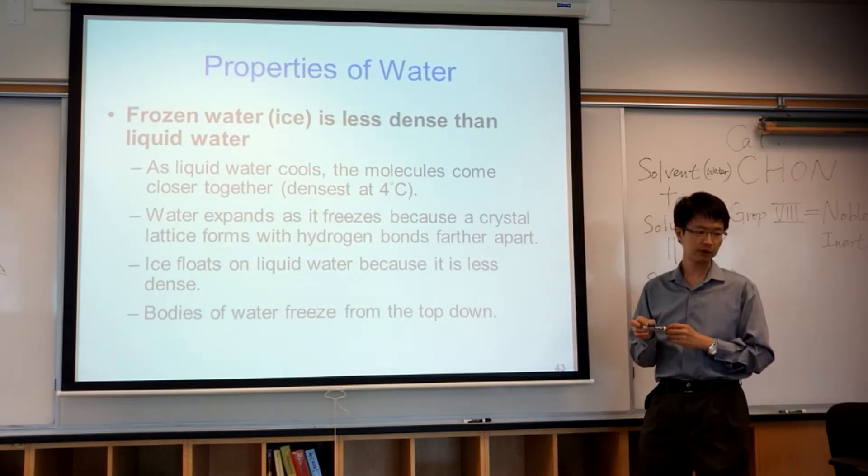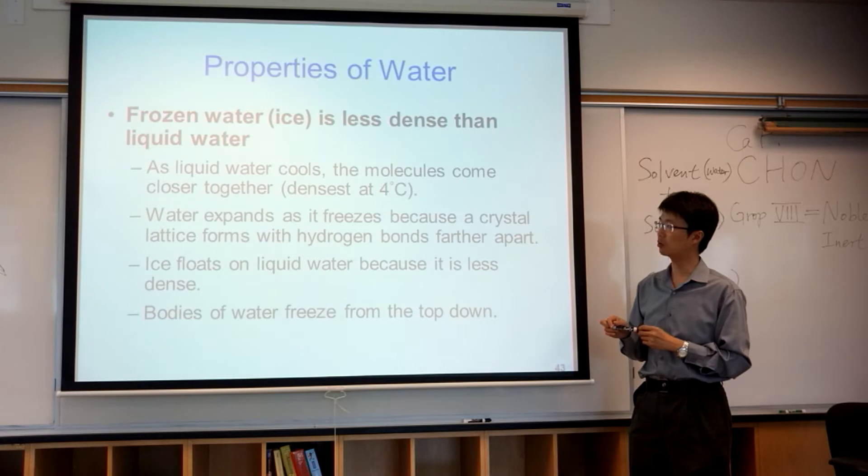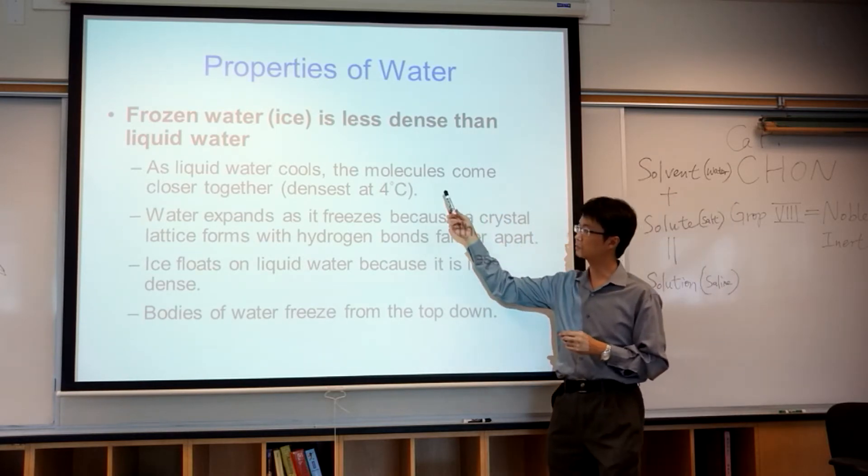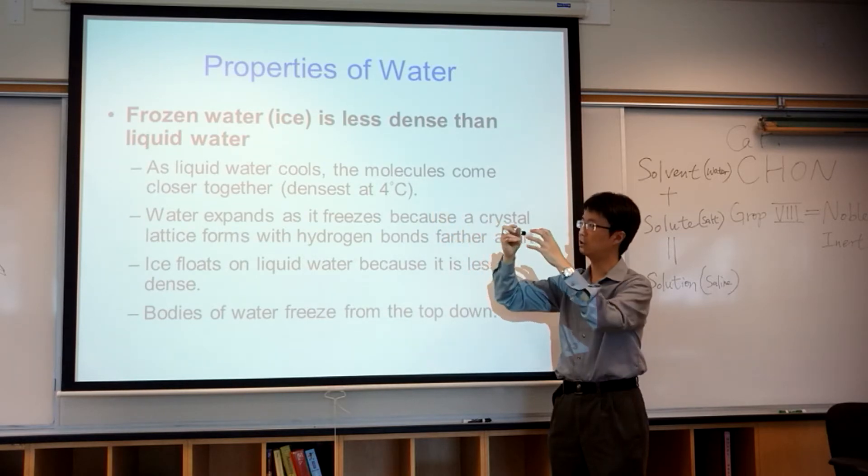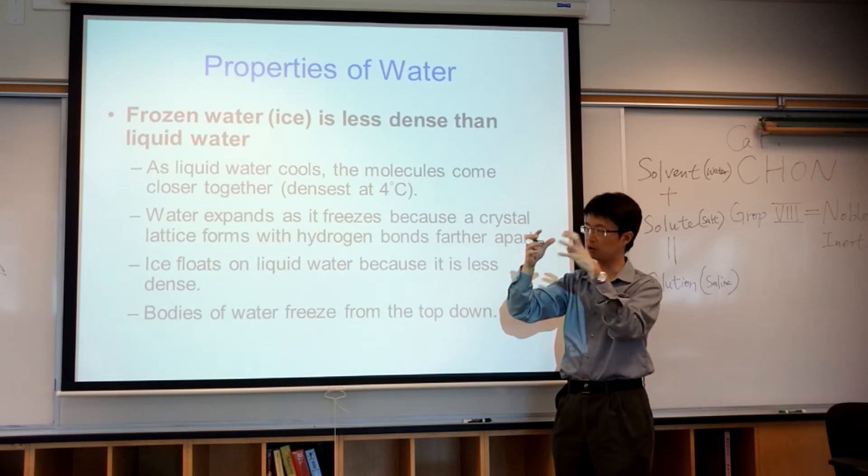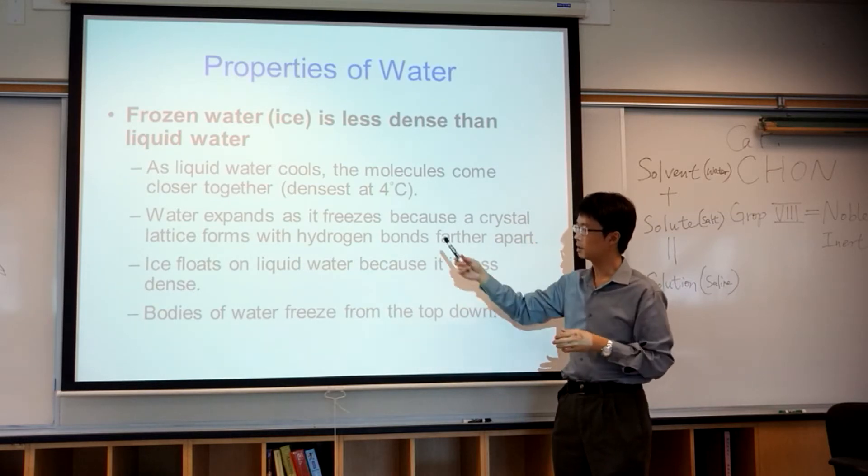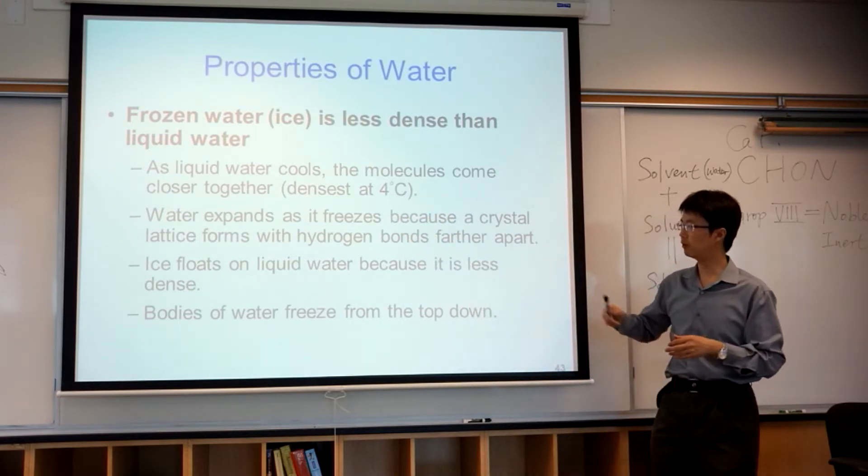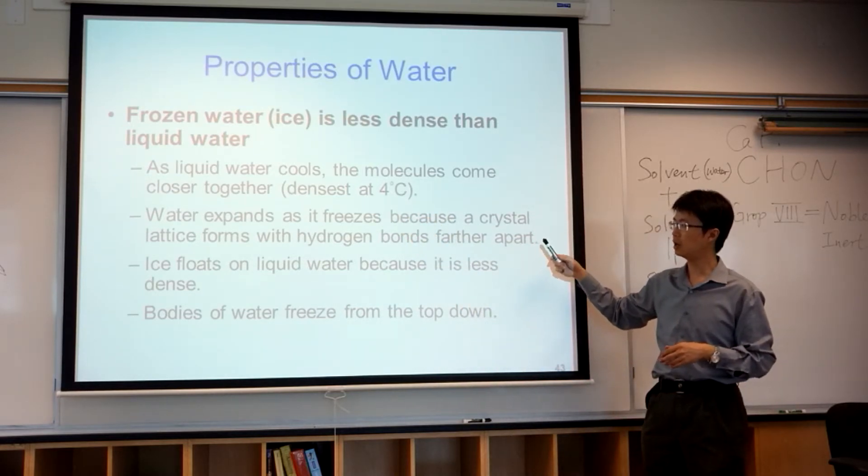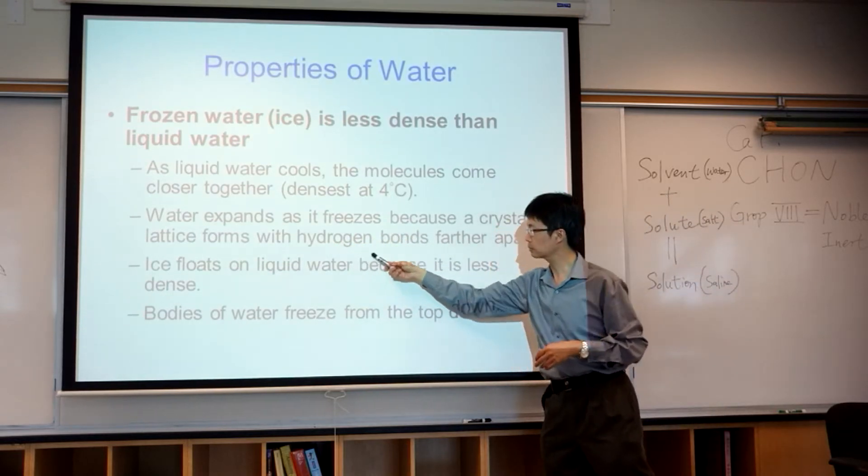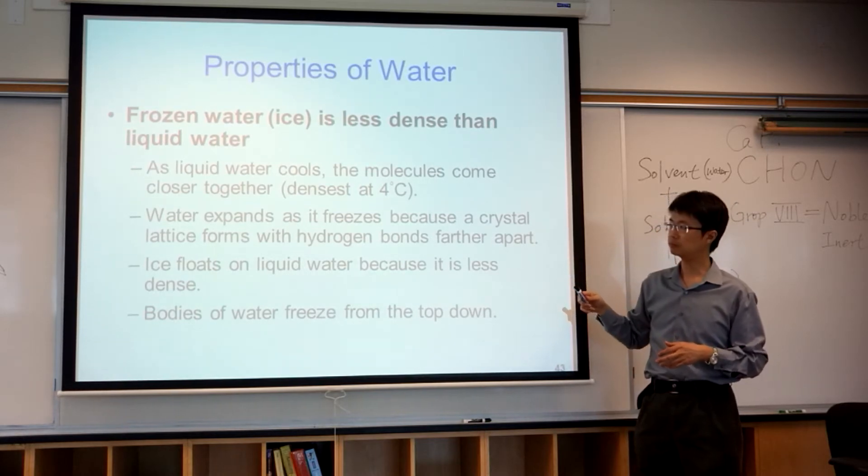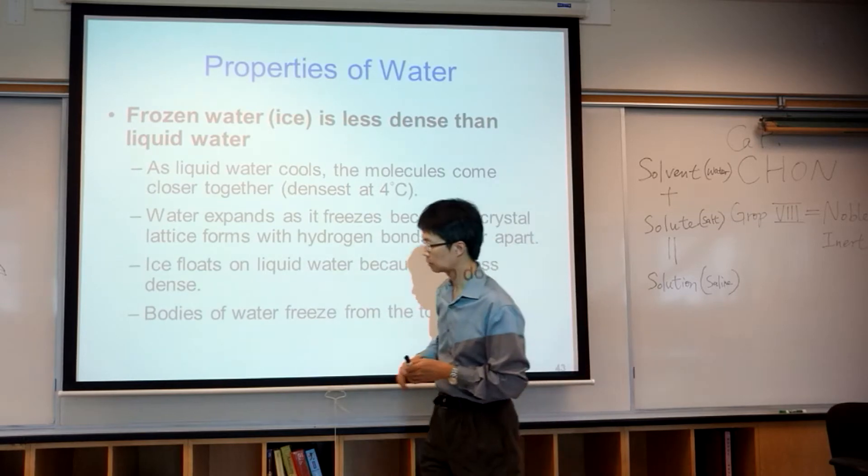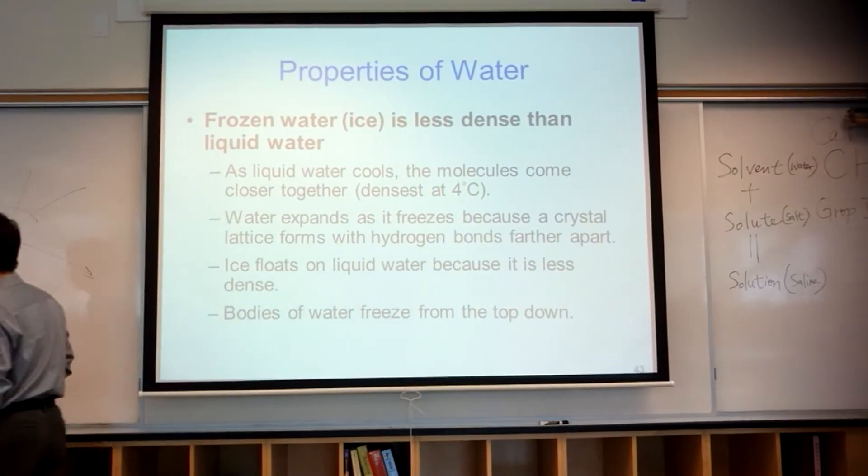Now frozen water is less dense than liquid water. Remember the freezing point of water is four degrees Celsius - it is the densest, meaning the water molecules come the closest together. But as it gets lower than four degrees Celsius, water actually expands and forms the crystal lattice. The hydrogen bonds form in here.